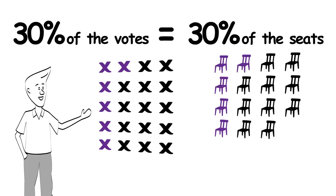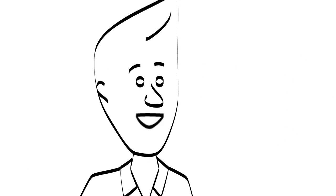You see, with pro-rep, 30% of the vote equals 30% of the seats. And with pro-rep, voters don't need to figure out how to vote strategically. They can just vote for the party or candidates that best align with their values.